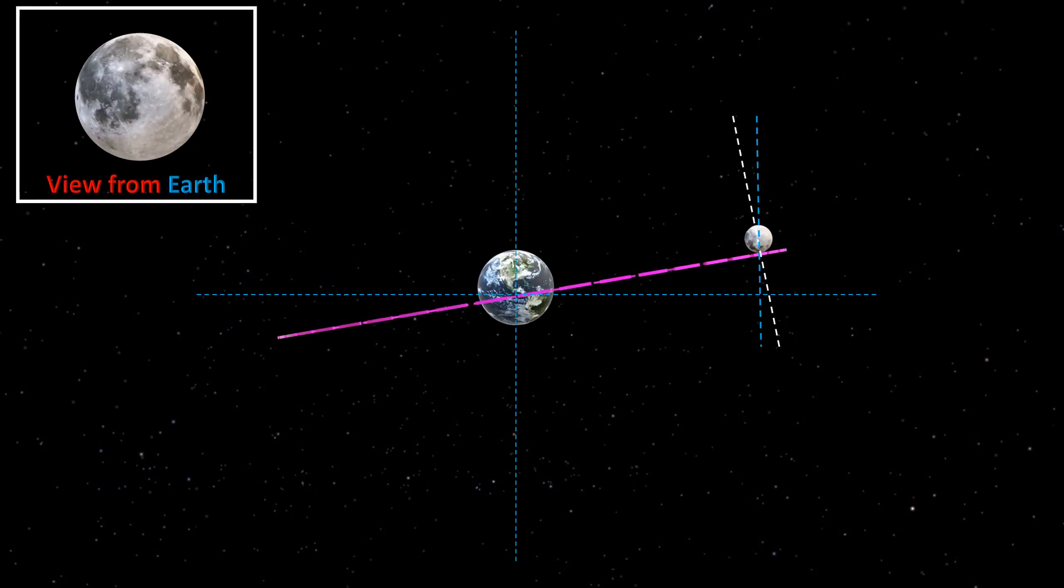The moon's orbit is inclined to the plane of the Earth's orbit around the sun by around 5.145 degrees, which results in a slight inclination of the moon's axis of rotation by about 6.68 degrees with the normal to the plane of the Earth's orbit.